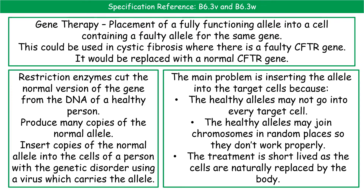Our third modern technique is gene therapy. Quite simply, gene therapy is where we try to replace a faulty allele with a fully functioning one of that same gene. The best example is cystic fibrosis, which is caused by one faulty gene — the CFTR gene — and what we do is replace it with a normal allele of the CFTR. We use a restriction enzyme to cut that normal version from the DNA of a healthy person, produce many copies of it, and then insert those copies into the cystic fibrosis sufferer using something like a virus as the vector to carry the allele.